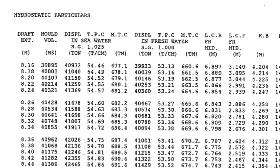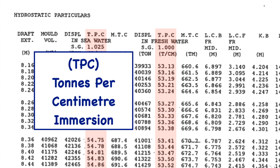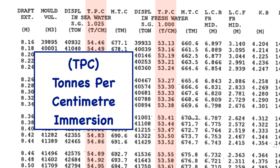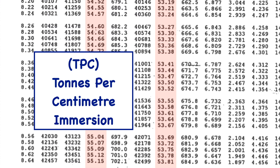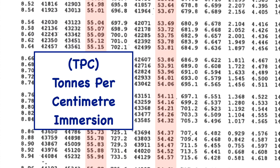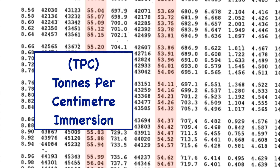The last number we need is one that should be familiar to you. It's the TPC, or tons per centimeter immersion. The TPC is the number we're going to use to calculate how a ship sinks down into the water as we add and remove weights.